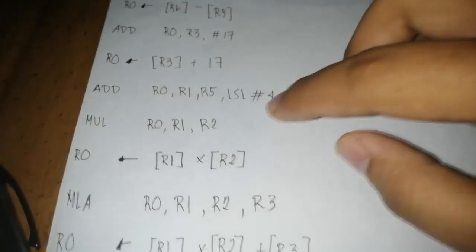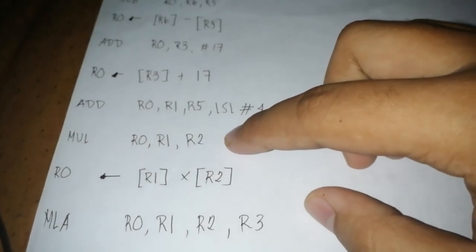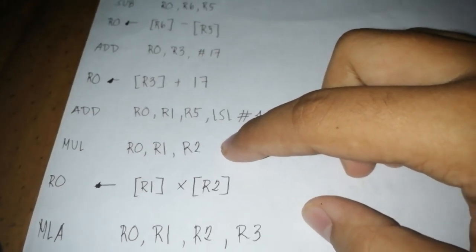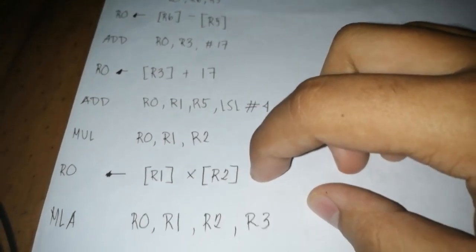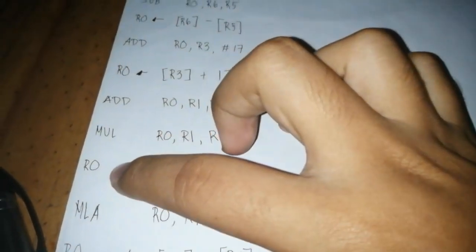So here we will use the multiply, where R1 will be multiplied by R2, and we'll put in R0.